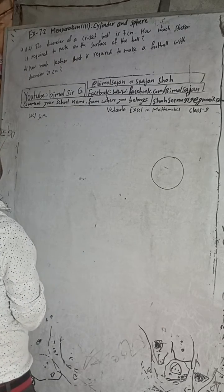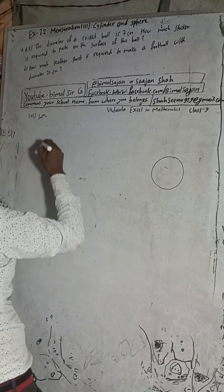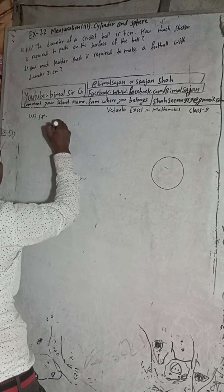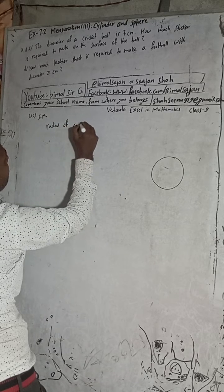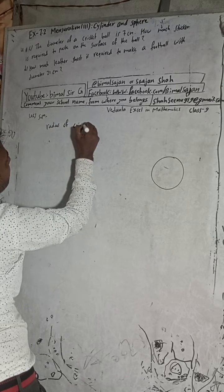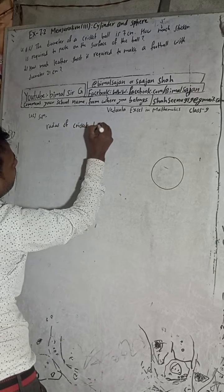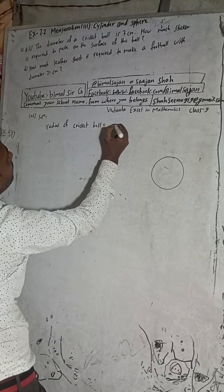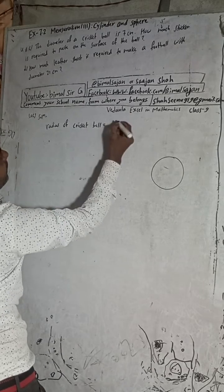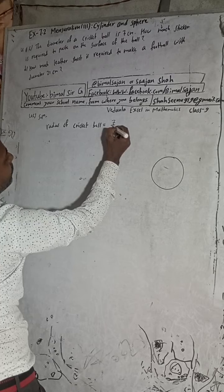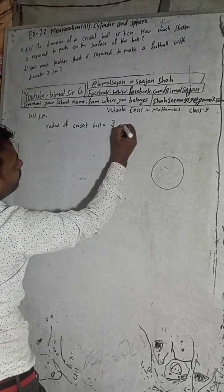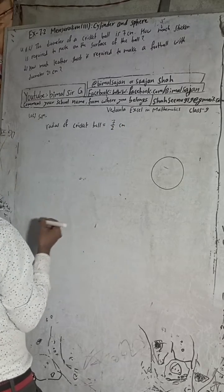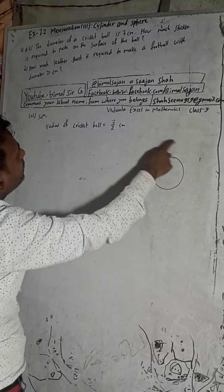So the diameter is given. We can write here: radius of a cricket ball. The diameter is 7, so the radius will be 7 by 2 — half of the diameter — which is 7/2 cm.